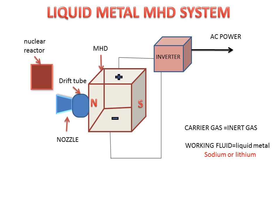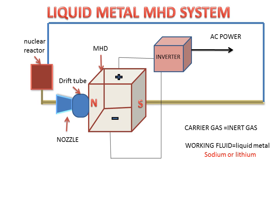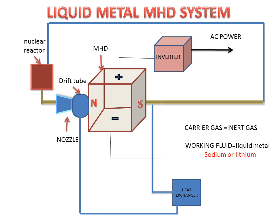A nuclear reactor is used in the liquid metal MHD system, which is connected to the MHD system. A heat exchanger is connected to the exhaust pipe of the MHD system so that this heat can be reused. The heat exchanger is also connected to the drift tube or mixing tube, and further connected to a turbine and generator for creating electric energy.